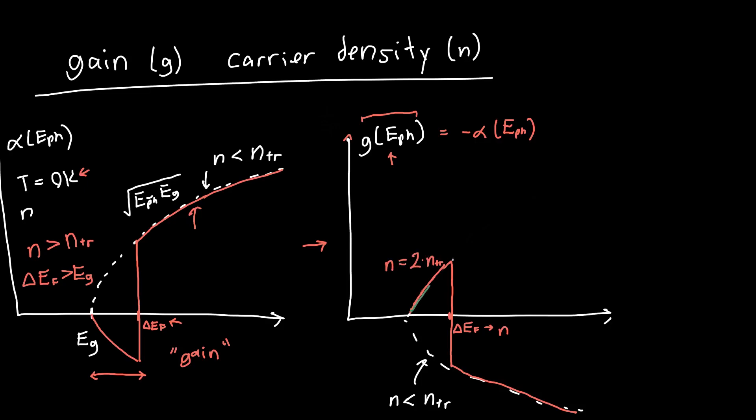And let's say we draw another curve for some carrier density even greater than that, so maybe this is n equals three times the transparency carrier density. In general, as we increase the carrier density, we're going to increase our Fermi level splitting, and that's going to cause this whole absorption spectra to essentially be shifted, or the crossover point from when we get gain to when we get absorption is going to be shifted to the right.